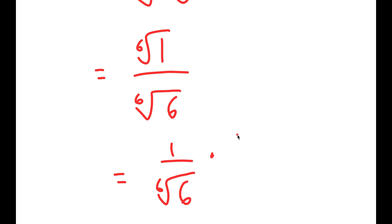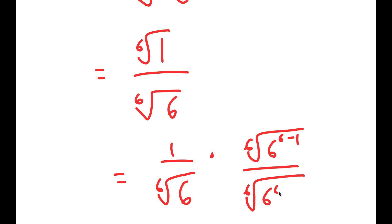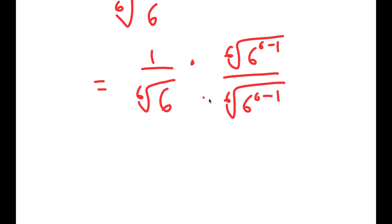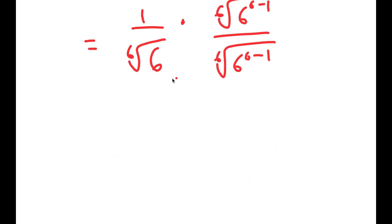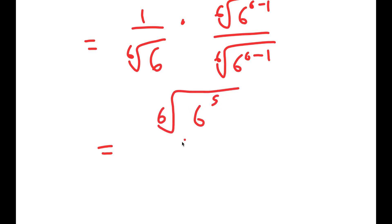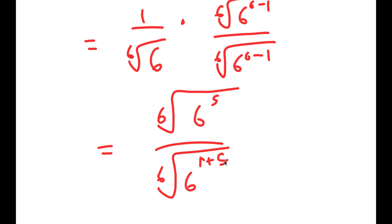Now, I'm going to multiply this with the 6th root of 6 to the power of 6 minus 1, over the 6th root of 6 to the power of 6 minus 1, so we can have no radicals in our denominator. This results in the 6th root of 6 to the power of 5, over the 6th root of 6 to the power of 1 plus 5, which is 6.